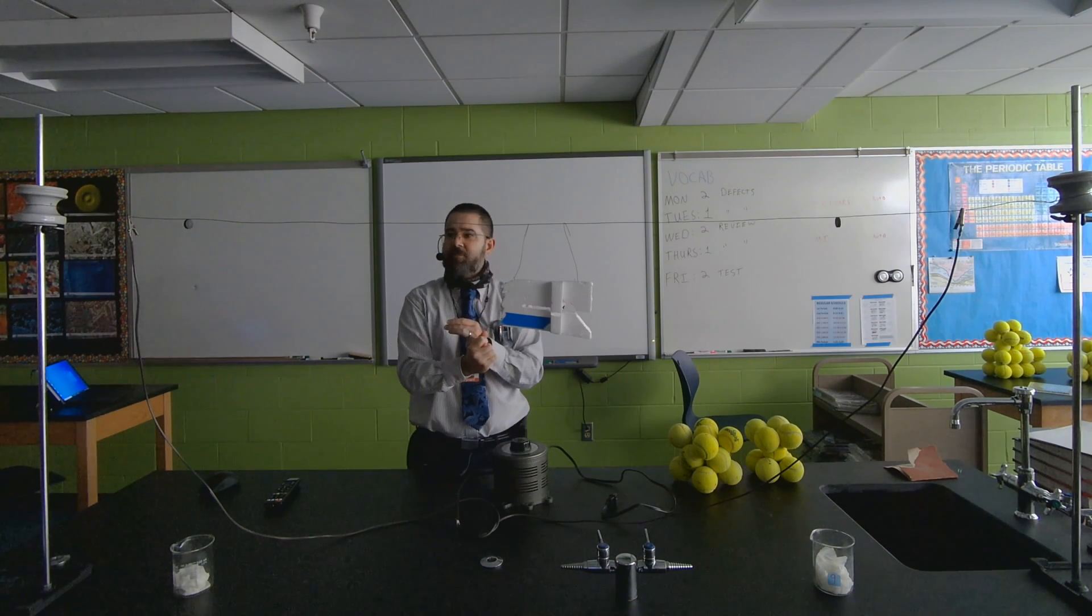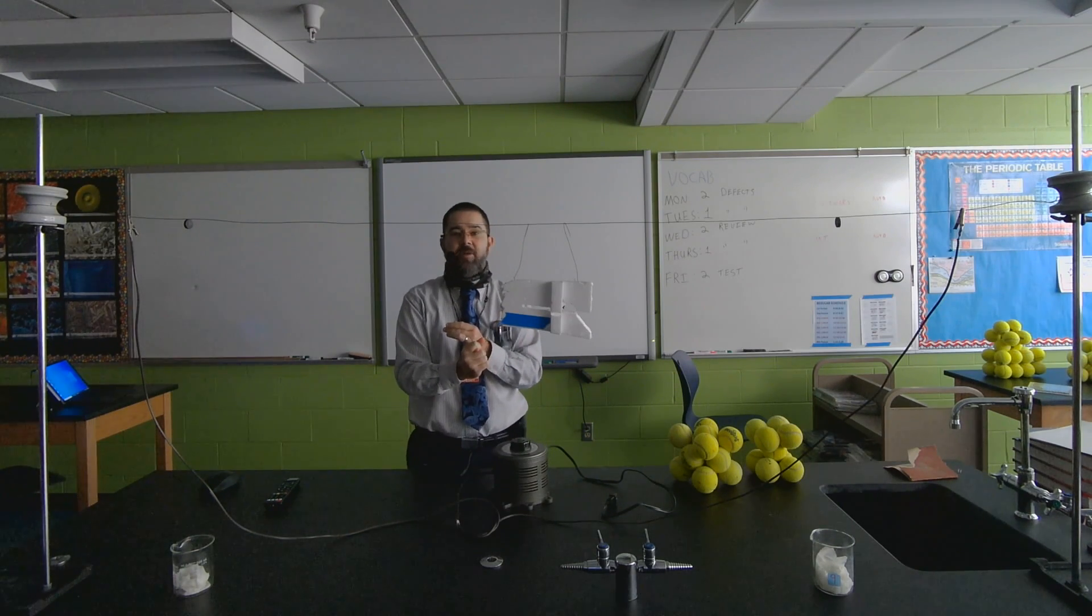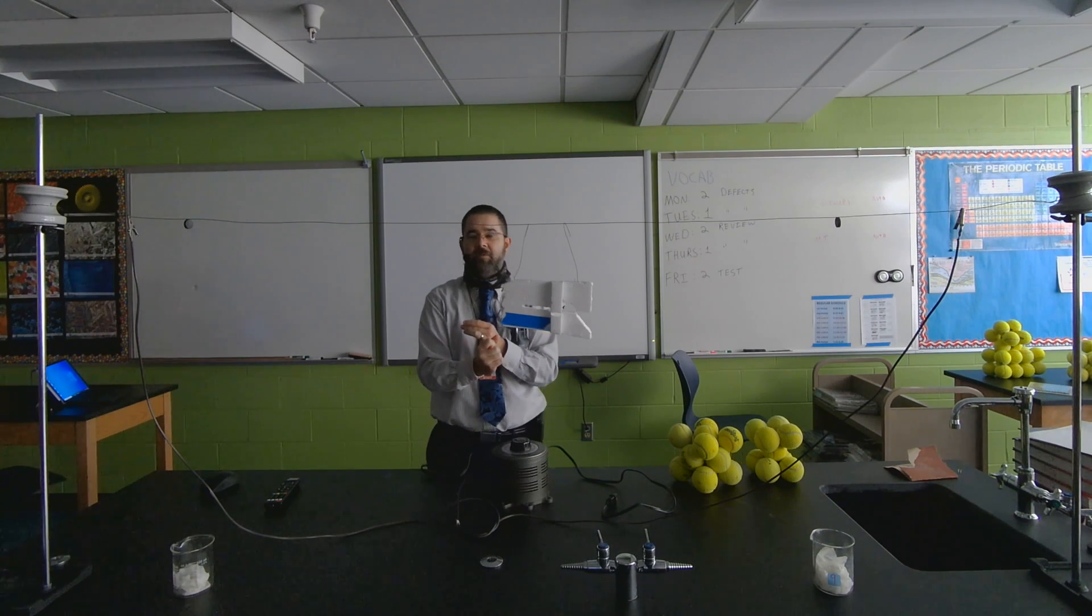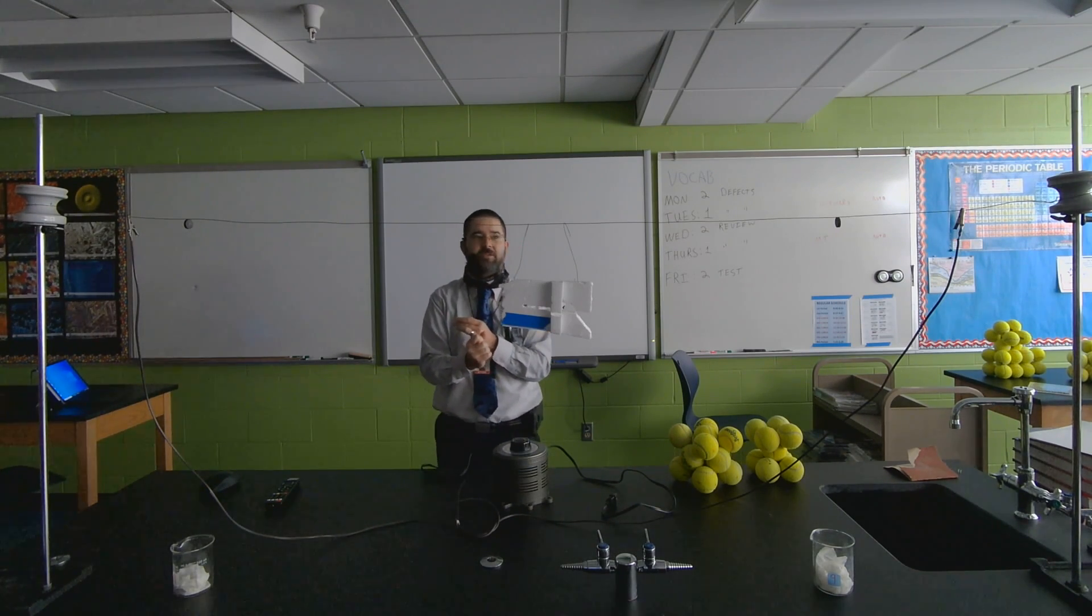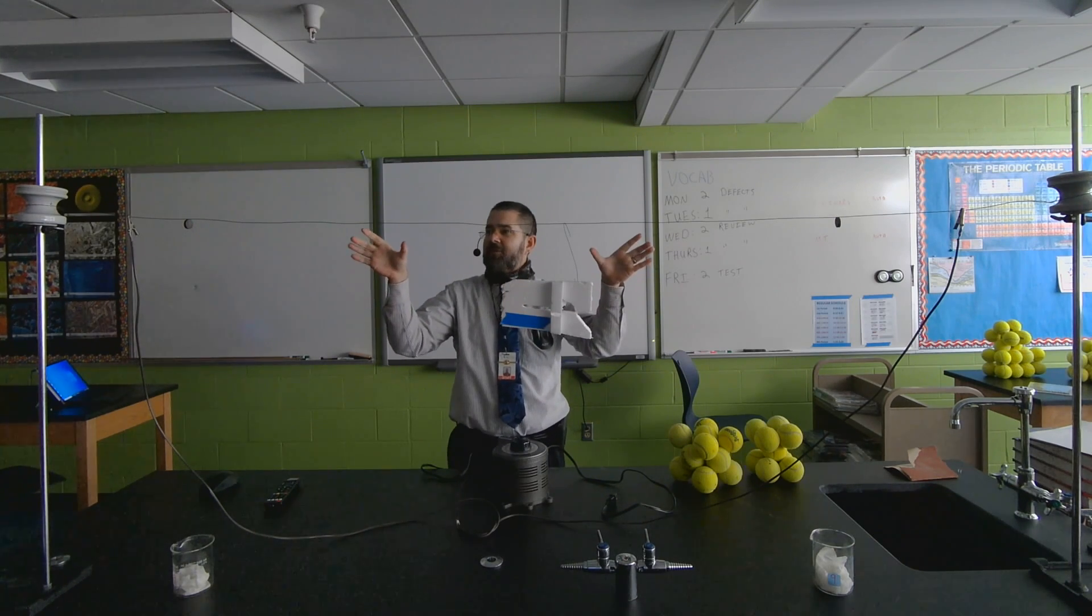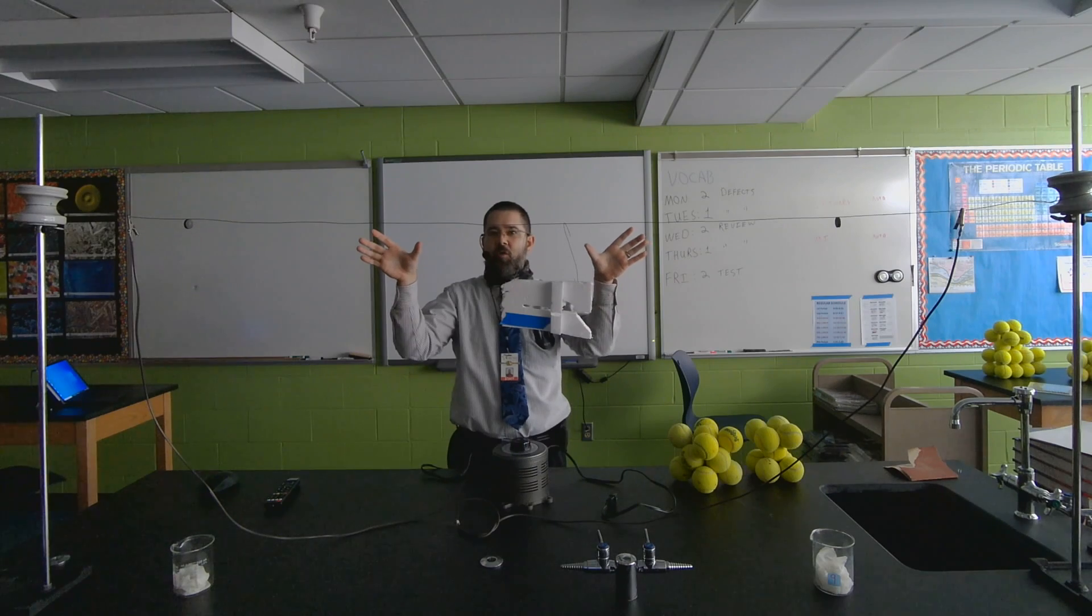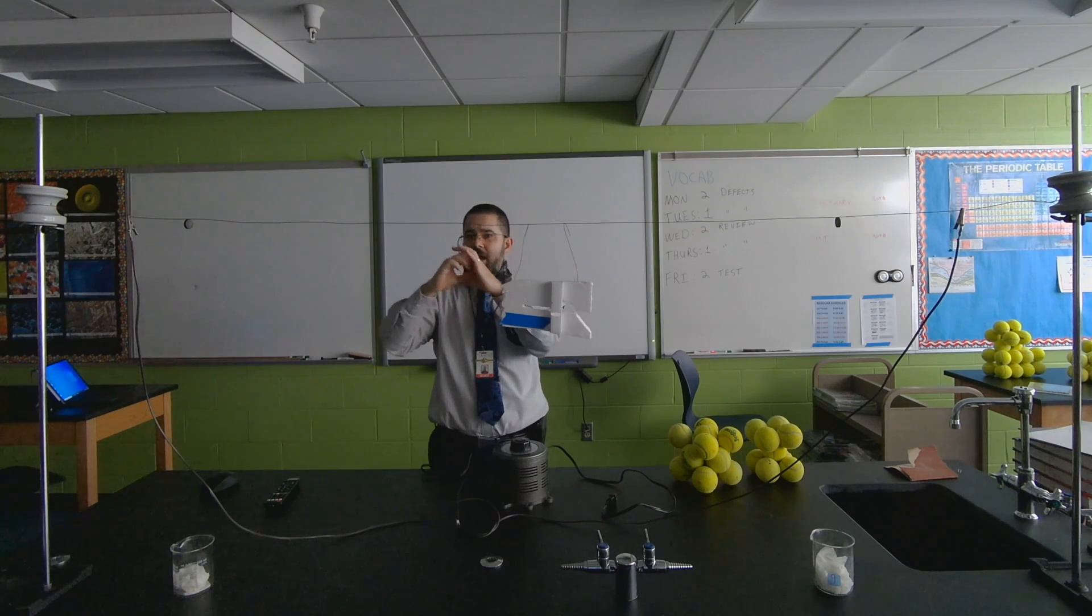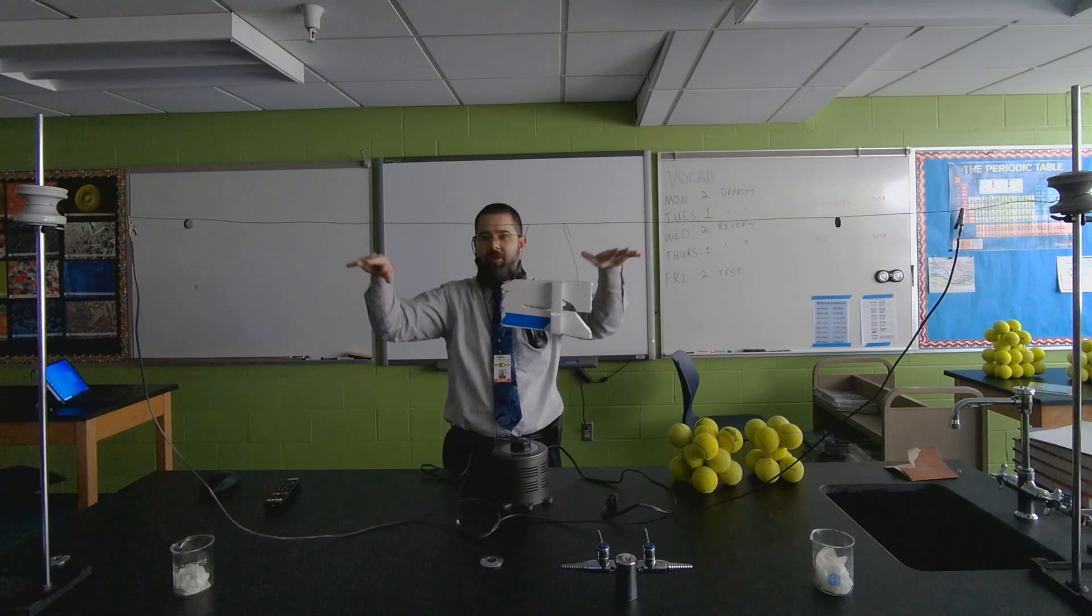The first thing is thermal expansion. Whenever it passes electricity through, it's going to start heating up that wire. When that wire heats up, it's going to start expanding. We talked about thermal expansion. That's going to cause that wire to expand, and when that wire expands, it's going to get not only bigger around, but also longer. You should see this wire start to dip down.